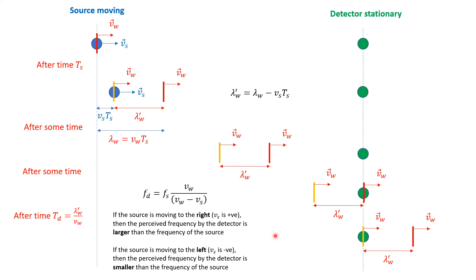When the source moves to the left, the wavelengths are larger, so the time between wavefronts perceived by the detector is longer, meaning the frequency is smaller. With v_s negative: 10 / (10 + 1) = 10/11, which is less than 1. So when the source moves to the left, the perceived frequency is less than the source frequency.